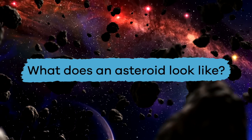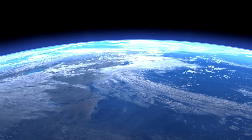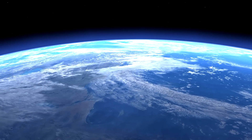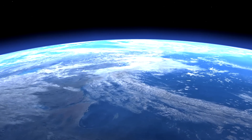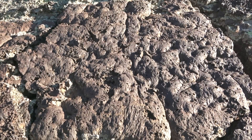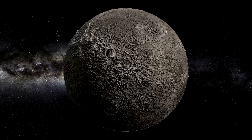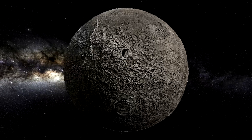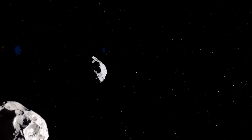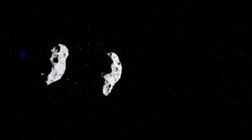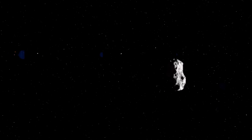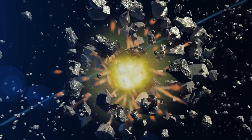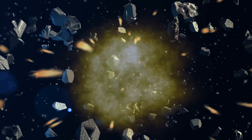What does an asteroid look like? Asteroids look like some of the rocks that you might find on Earth. But many asteroids also have craters or holes in their surface. Craters form when asteroids crash into other objects in space, and when they crash, they often break into smaller pieces.